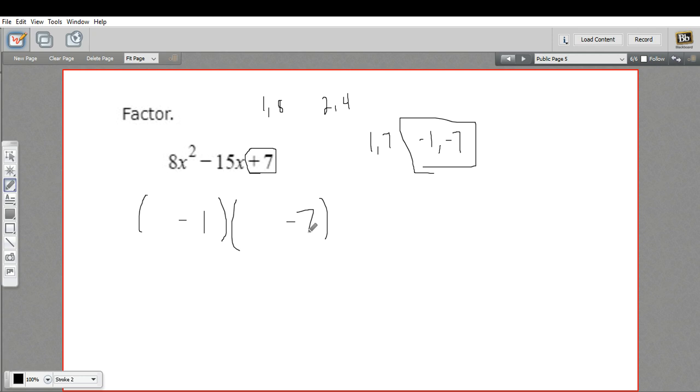Now what I need to do is play around with versions of the 1 and the 8 and the 2 and the 4 so that this will foil out correctly to make this quadratic. So let's just ask what happens if I put in a 1x and an 8x right here.